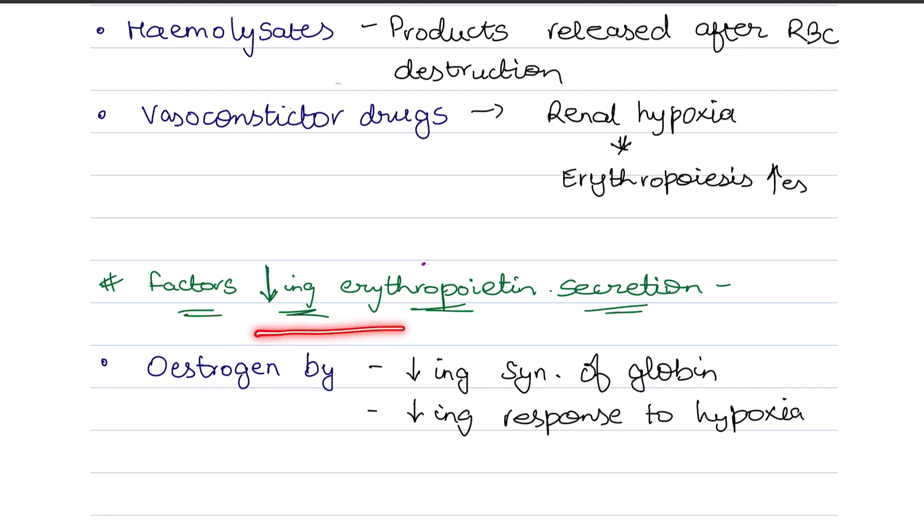So the estrogen hormone reduces the cause of erythropoietin secretion, and we have to consider that.